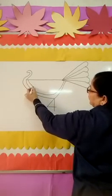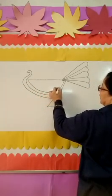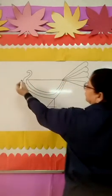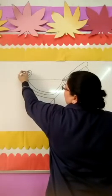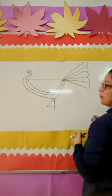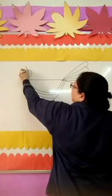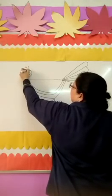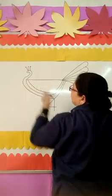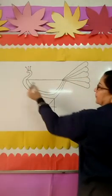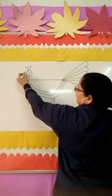One more slanting line like this. Here you will draw the eye of the peacock. Antennae of the peacock like this and beak like this.